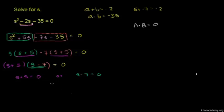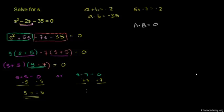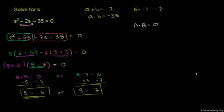So you have these two equations. We can just subtract 5 from both sides of the first equation, giving us s equals negative 5. Or we can add 7 to both sides of the second equation, giving us s equals 7. So if s equals negative 5 or s equals 7, we have satisfied the equation. We can verify: if s equals negative 5, you have 25 plus 10 minus 35, which equals 0. If s equals 7, then 49 minus 14 minus 35 equals 0. So we've solved for s.